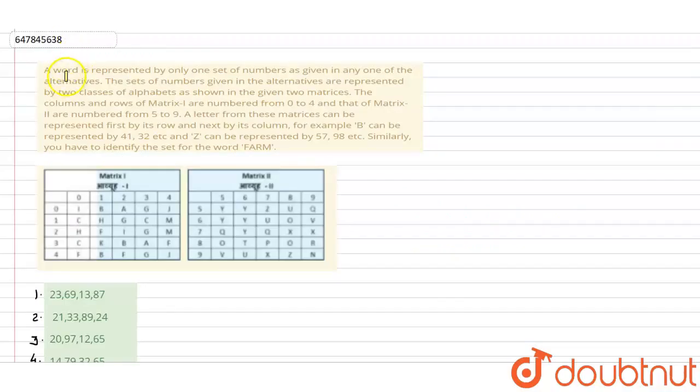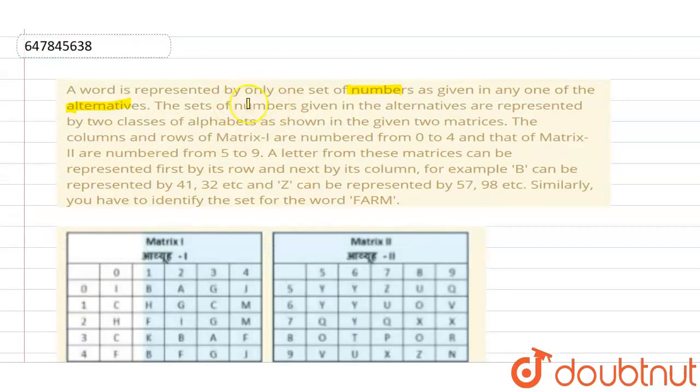Hello everyone, so we have given this question. A word is represented by only one set of numbers as given in any one of the alternatives. The set of numbers given in the alternatives are represented by two classes of alphabets as shown in the given two matrices. The columns and rows of matrix 1 are numbered from 0 to 4 and that of matrix 2 are numbered from 5 to 9.